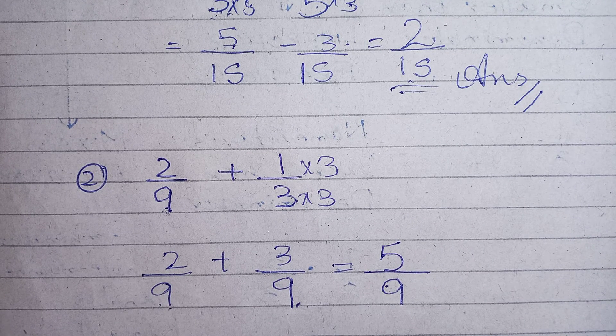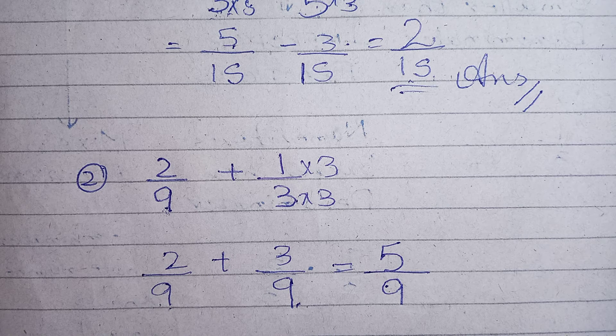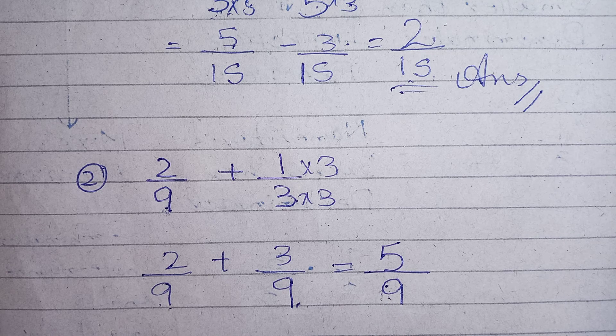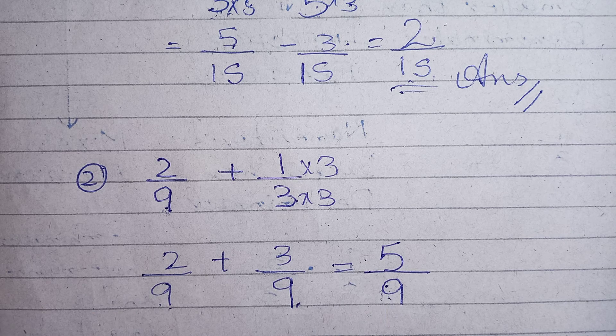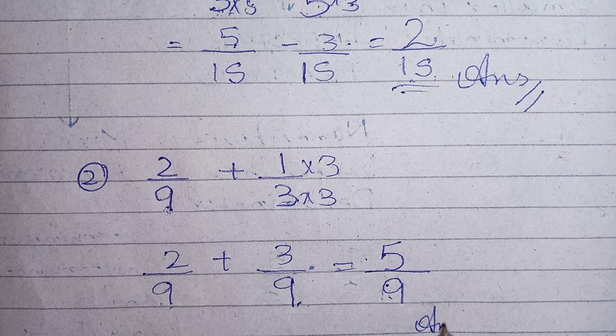Keeping the denominator same and add the numerators. Now again is it possible to simplify? No. 5 and 9 cannot come in the same table, and I am having the denominator greater than the numerator. So division is not possible. Simplification is not possible. So this is my answer.